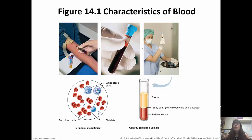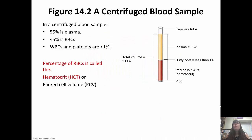This is just showing you blood that has been centrifuged. As you can see it separates out into layers. There's the plasma layer, the red blood cell layer, and then that buffy coat in the middle are the white blood cells and platelets. In a centrifuged blood sample about 55 percent is plasma, 45 percent are red blood cells, and then the rest are white blood cells and platelets. So we mostly have red blood cells in our blood as opposed to white blood cells.